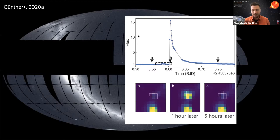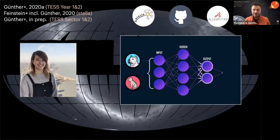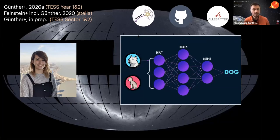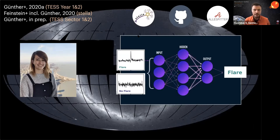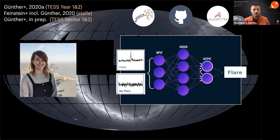Human eyes are exceptionally good at picking out these flares in light curves and image pixels, but with the big data era of TESS, human inspection would literally take a lifetime. So we employed Bayesian frameworks and neural networks to do it much more efficiently and robustly. In particular, I highlight the STELLA software developed by Adina Feinstein — a convolutional neural network trained to differentiate between flare and non-flare cases by looking at short sections of the light curves.